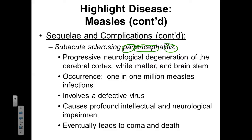It occurs approximately one in every million infections of measles, so it's not terribly common. Thankfully, measles in the United States is not very common. It's caused by a defective version of the measles virus — generally speaking, the measles virus doesn't cause this symptom, but if it mutates so it's not working properly, it can result in this panencephalitis.